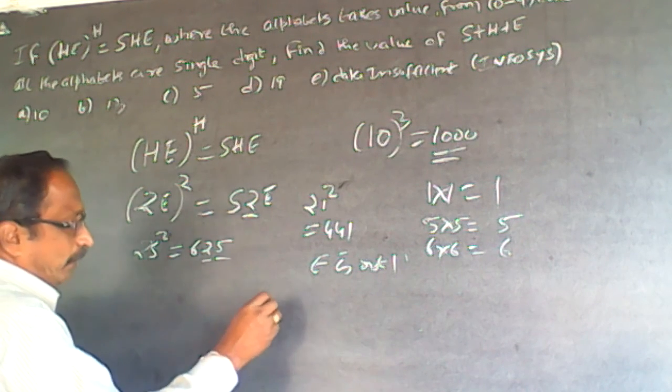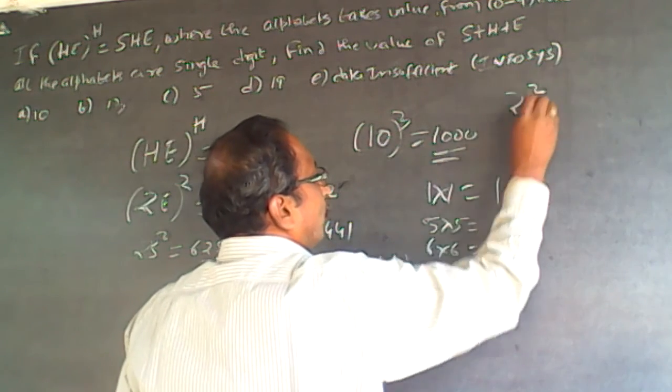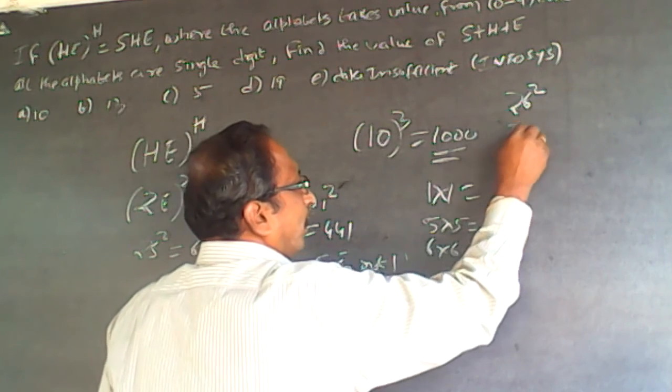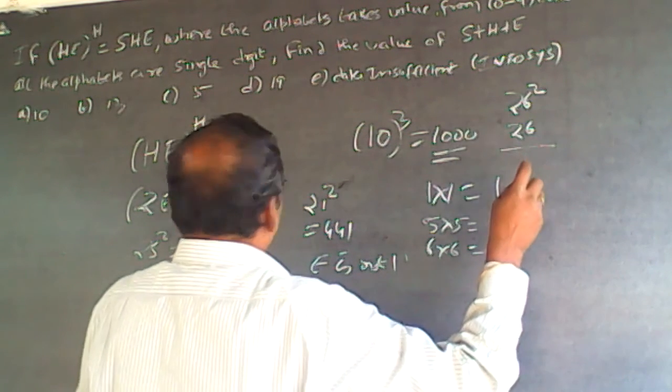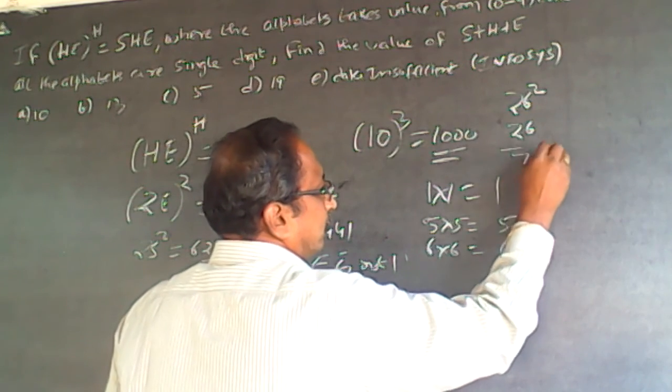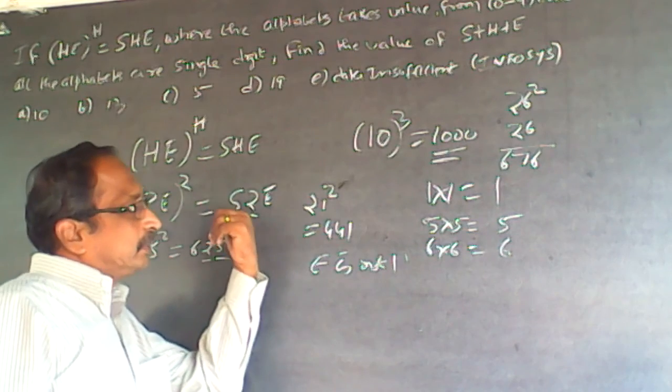Supposing it is 26 square. So it will be 26 into 26, which will be 625 plus 51 will be 676, which is not matching here. It is not saying yes.